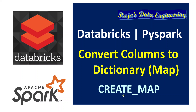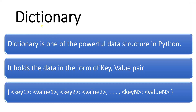Before understanding create_map, let us understand what a dictionary is. Dictionary is one of the powerful data structures used in Python. This data structure makes the developer's life easier in most situations. We can implement very complex business logic using this dictionary — it makes complex logic simpler. Dictionary holds data in the form of key-value pairs. The keys and values are enclosed within curly braces, each key and value separated by a colon, and each key-value pair separated by a comma.